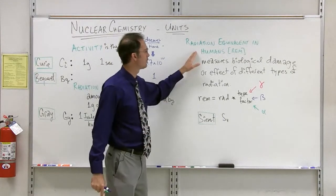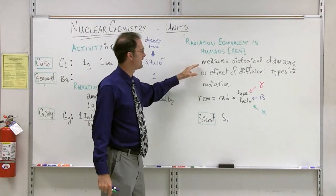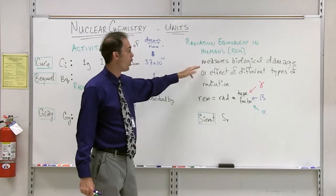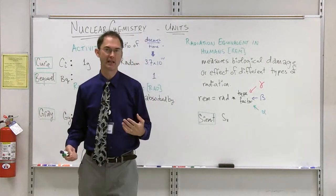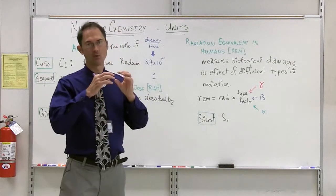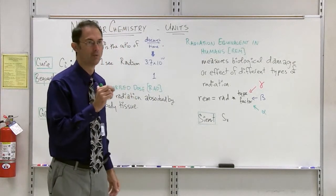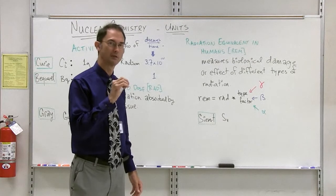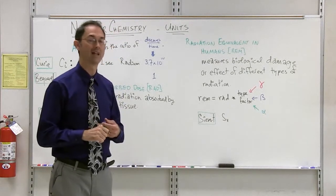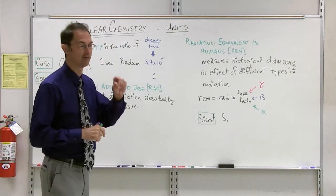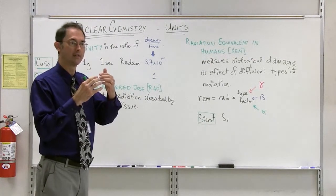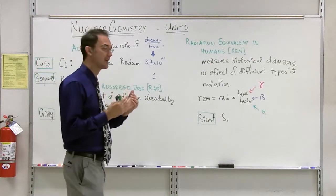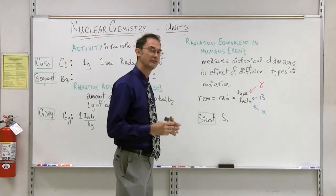The radiation equivalent in humans is that it measures the biological damage or effect on different types of radiation. And the biological effect in this case may have to do with breaking down cell walls. It may have to do with having effects on cell reproduction. And in many cases, it will have an effect on the effectiveness of DNA to maintain its integrity.